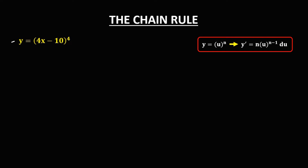To find the derivative using this formula — u to the power n equals n times u to the power n minus 1, times the derivative of u — for this given, u is equal to 4x minus 10.